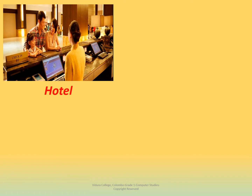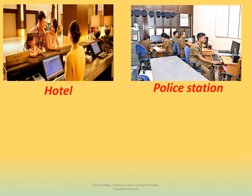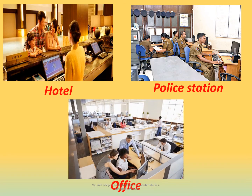Hotels: computers are used in hotels to keep records and to maintain reservations. Police stations: they use computers to keep criminal records, to check fingerprints, and for office work. Office: at an office, computers are used for many purposes. It makes it easier for people to organize and find information quickly.